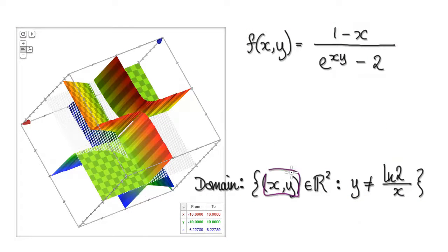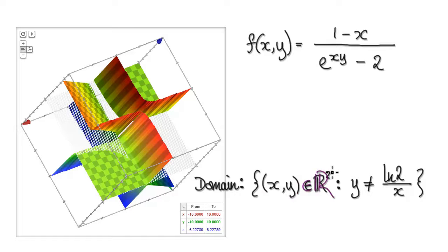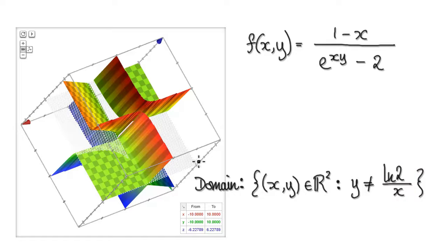So your domain would be written as: the set of (x, y) belonging to the real plane such that y cannot equal ln(2) over x. Remember, there are lots of ways of writing domains depending on your teacher — here's another way of writing it.